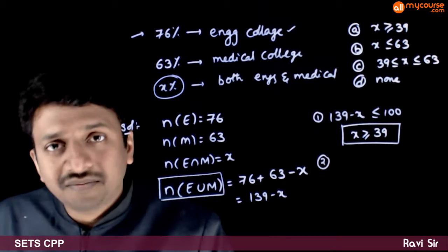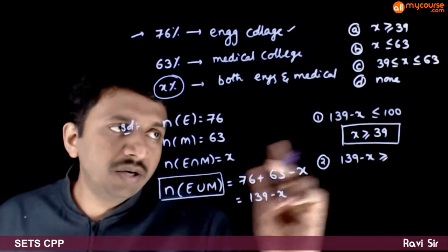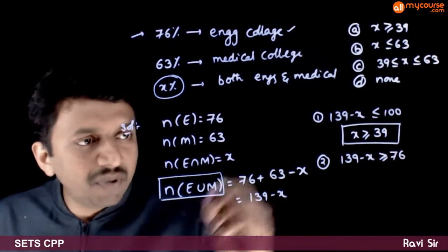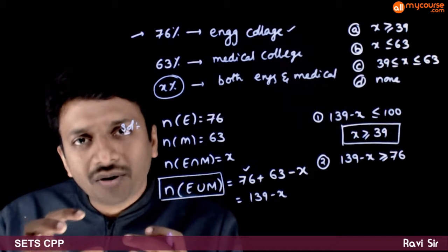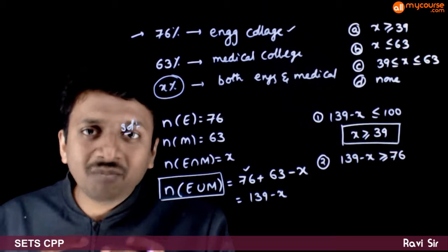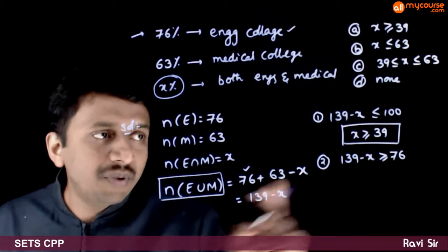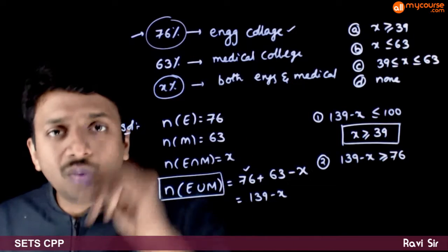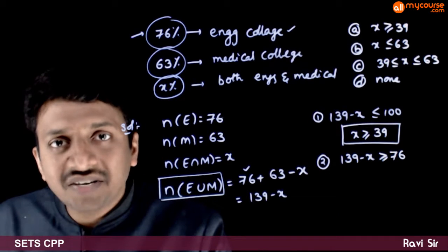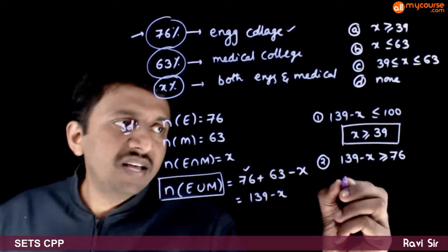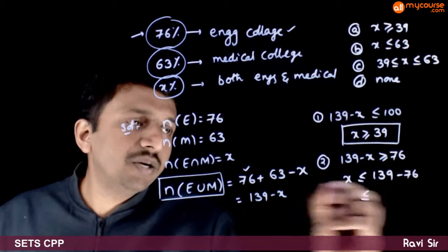Next, N(E ∪ M), which is 139 − X, will always be greater than or equal to 76, because there are 76 students going to engineering college alone. If we combine students going to engineering and medical college, that number cannot be less than 76 — it has to be greater than or equal to 76. Hence, X ≤ 139 − 76, that is, X ≤ 63.